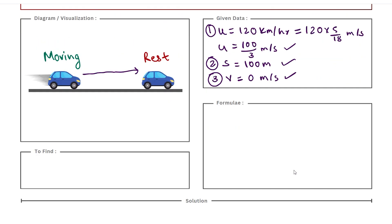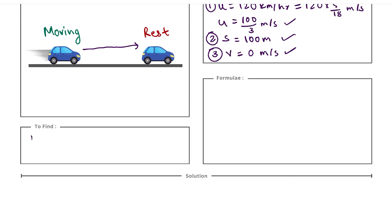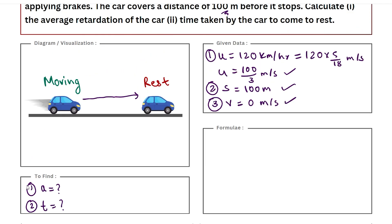Based on these three given values, we are expected to calculate first the average retardation or deceleration, that is negative acceleration. The second value is the time duration. In this case, we can conclude that whatever formulas we are going to use are the formulas for motion in a straight line under constant acceleration, our equations of kinematics.